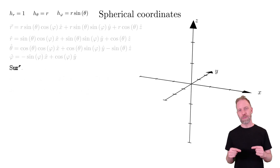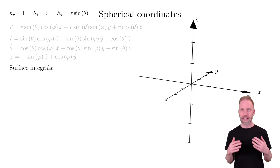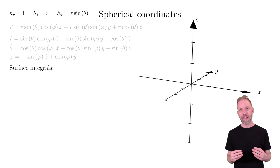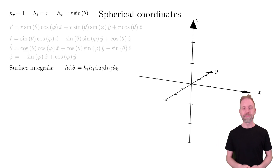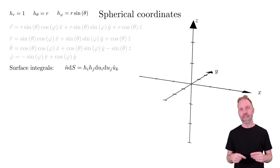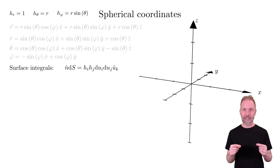Next, we will move to surface integrals. We will only cover the basic cases where one coordinate is constant. For these cases, the general expression from general orthogonal coordinates is: assume that k is the constant direction and the surface varies in i and j. Then the surface element is given by h_i h_j du_i du_j, with normal in the u_k direction.